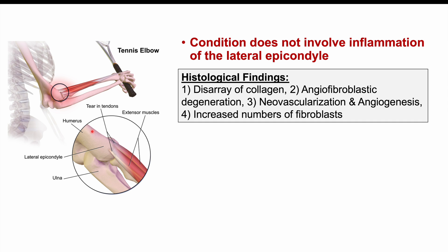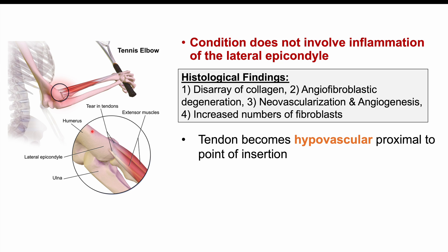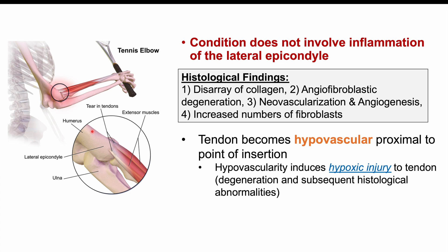Looking at the histology, several characteristic findings are observed: disarray of collagen, angiofibroblastic degeneration, neovascularization (formation of new blood vessels), angiogenesis (new vessels forming from existing ones), and an increased number of fibroblasts. What does appear to occur is that the tendon becomes hypovascular proximal to the point of insertion, meaning insufficient oxygen reaches that area. This hypovascularity induces hypoxic injury, which subsequently leads to tendon degeneration and the histological abnormalities described.